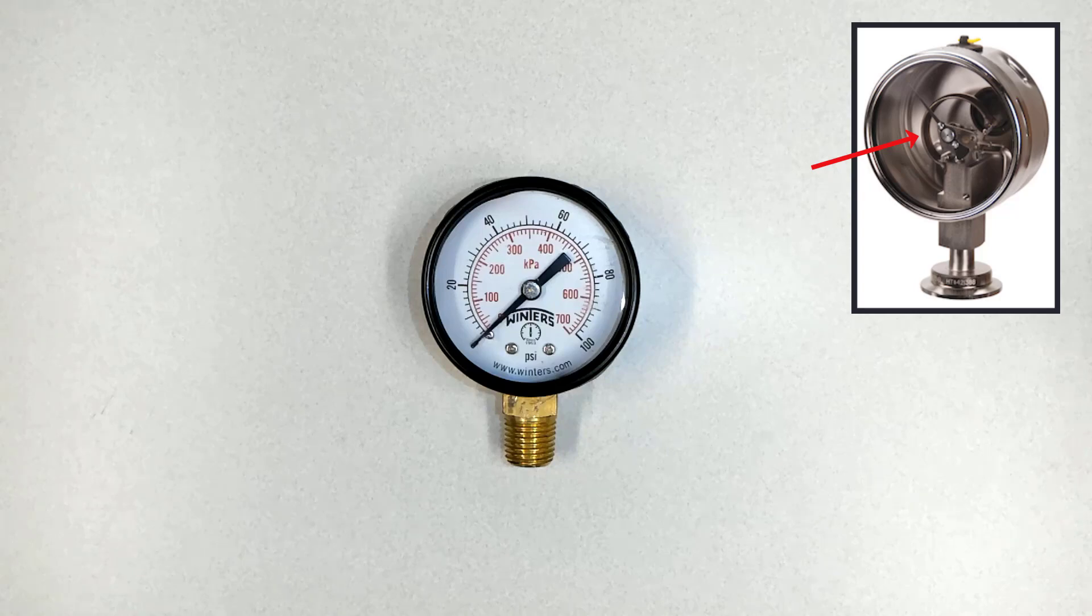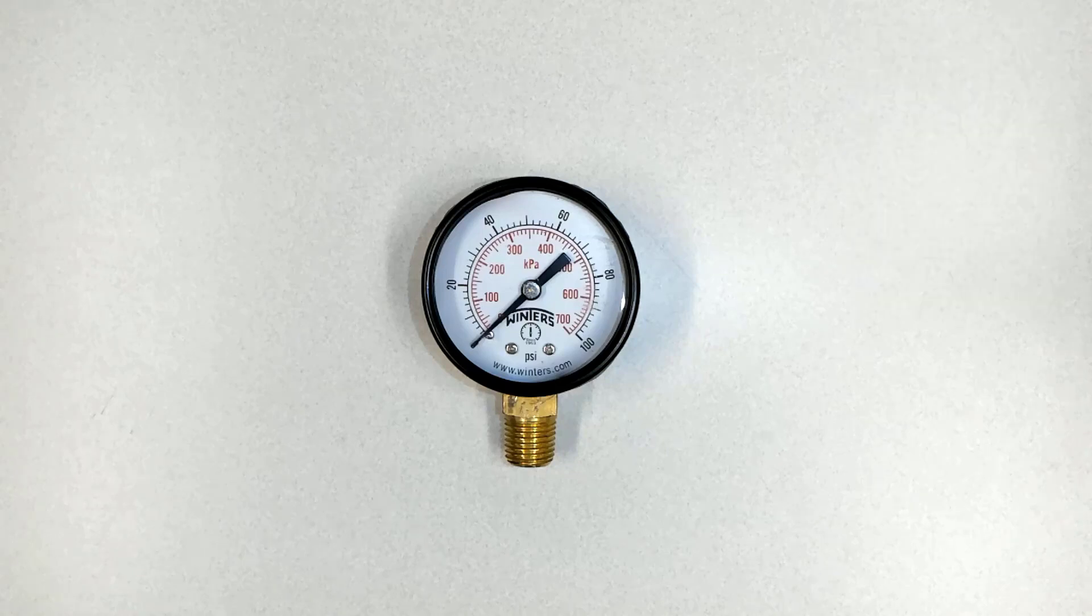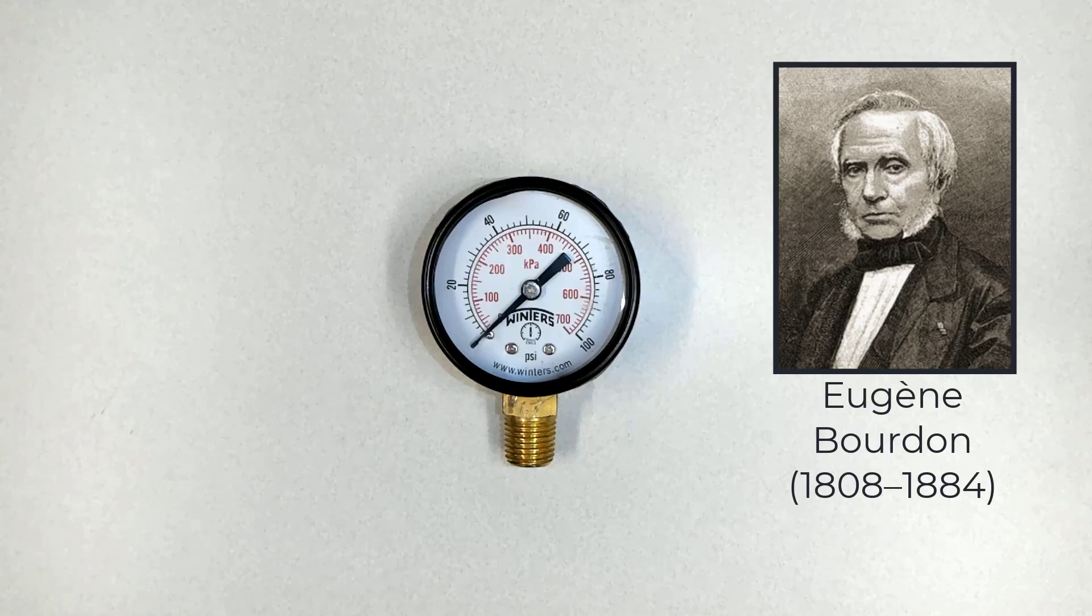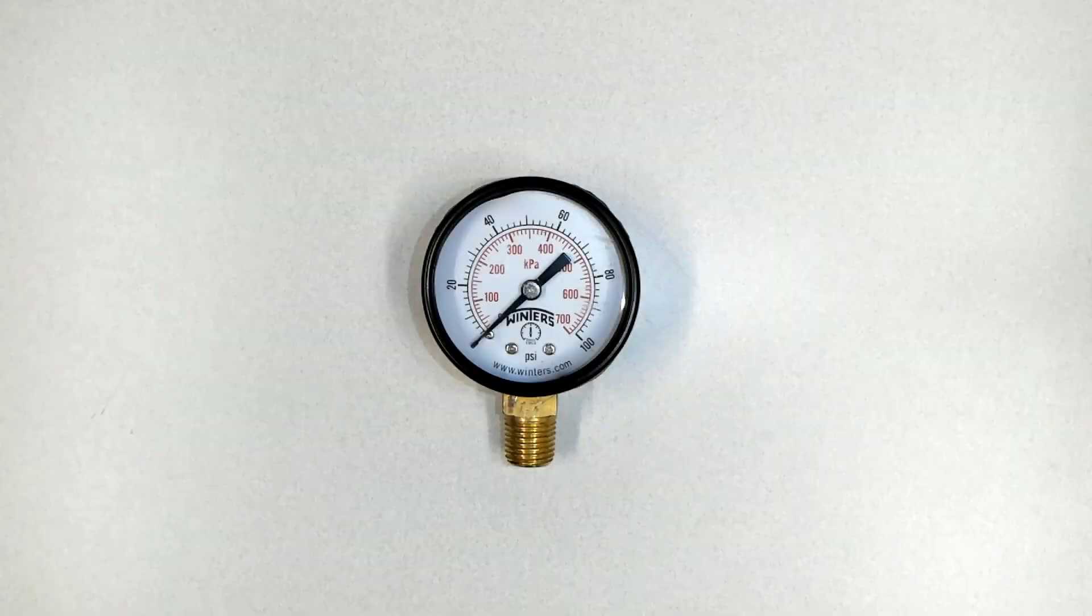This pressure gauge is called Bourdon Gauge because it was invented in 1852 by French watchmaker and engineer Eugene Bourdon. As you can see in the video,